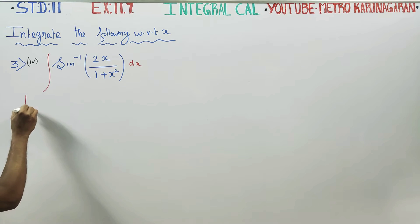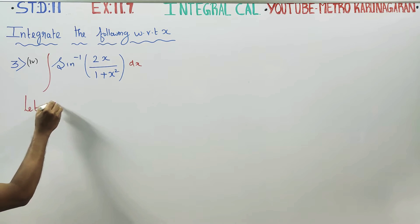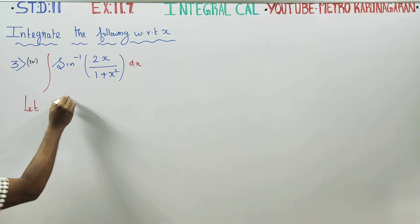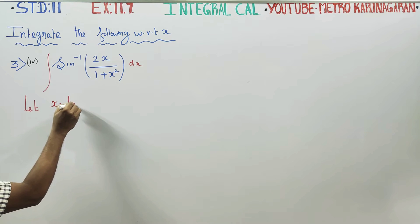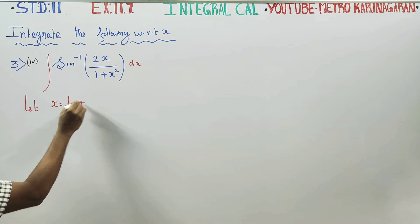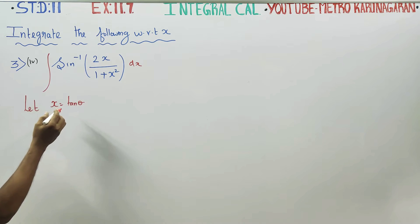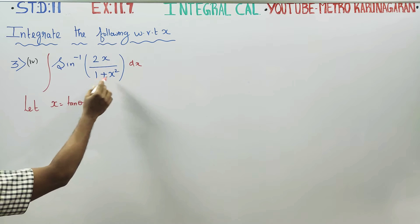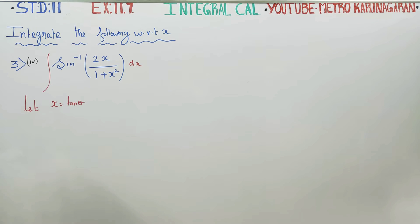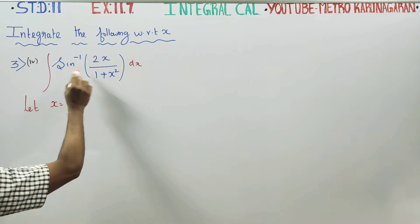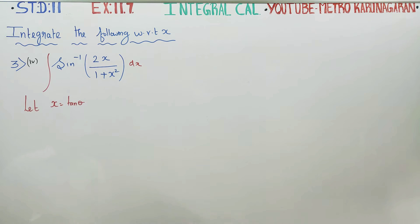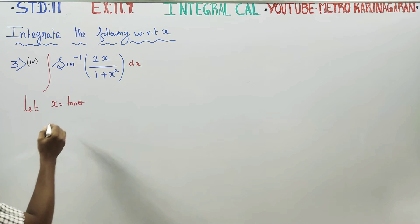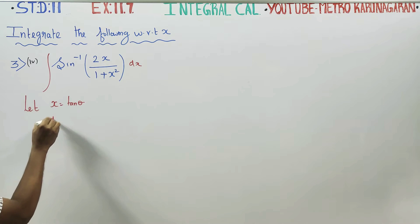For the substitution, I am going to use x is equal to tan theta. The reason I use this substitution is that 2 tan theta by 1 plus tan square theta equals sin 2 theta, so the sin inverse and sin will cancel.